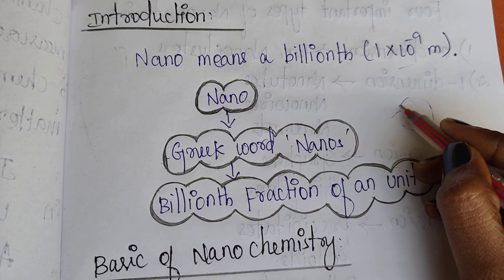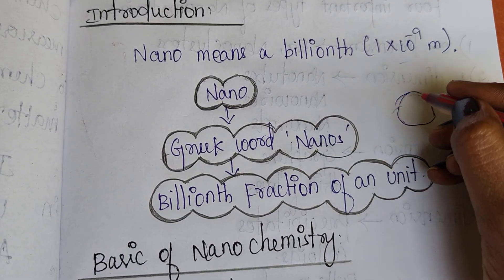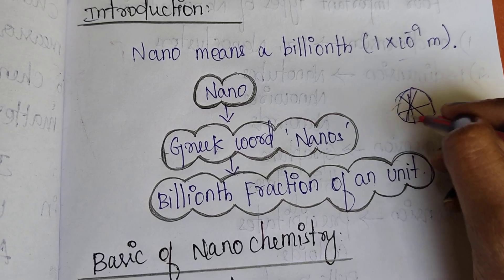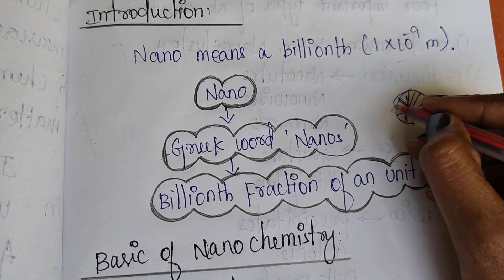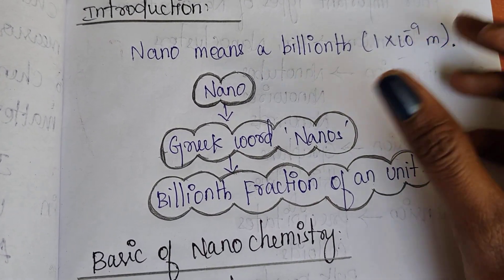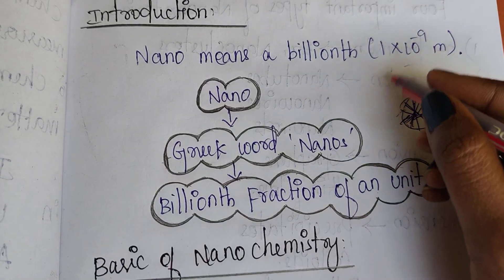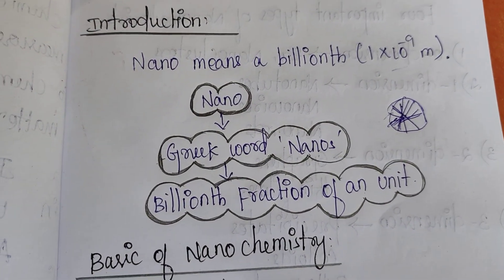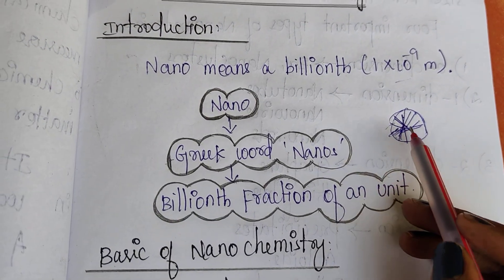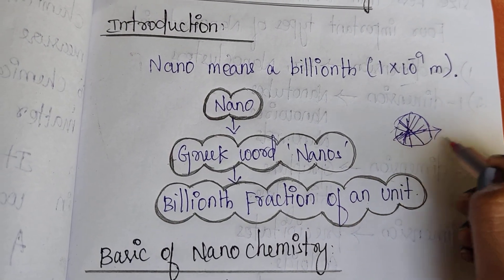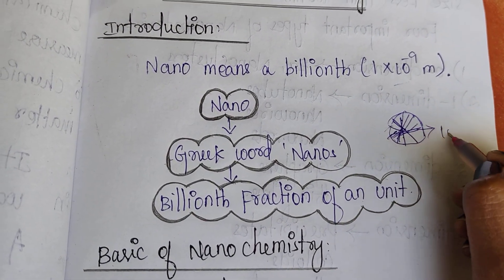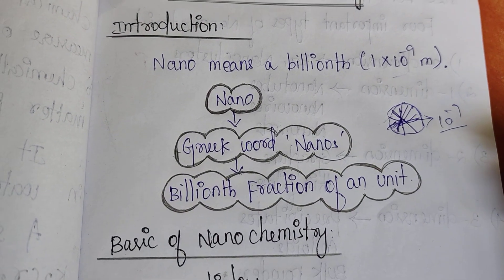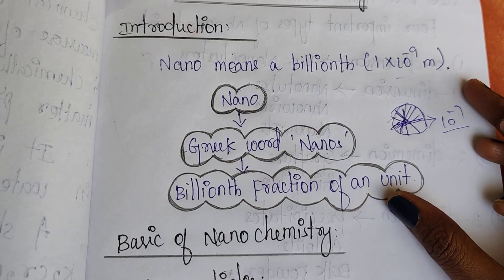For example, if we talk about billionth fractions, we will talk about nano — 10 to the power minus 9. This is what we refer to as nano.